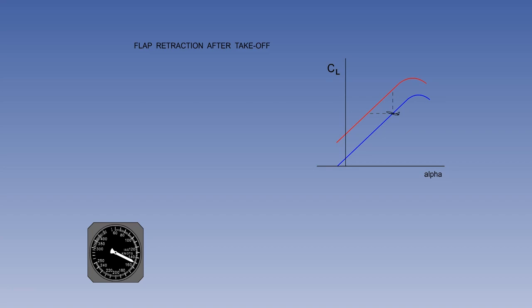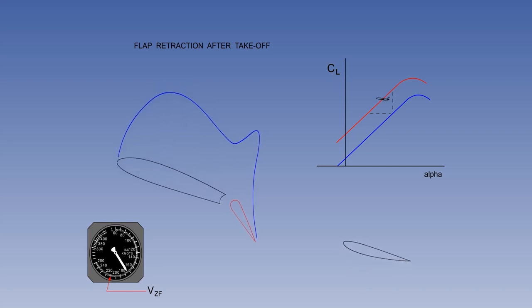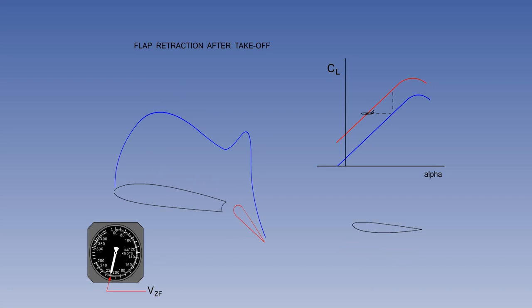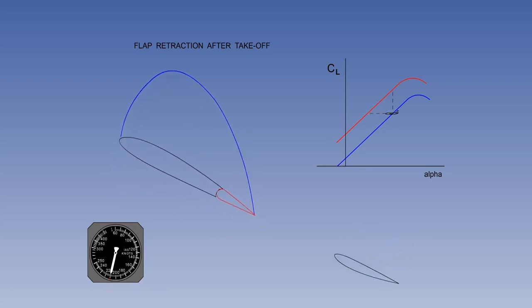We must trade indicated airspeed and angle of attack to keep lift the same as the weight. Before retracting the flaps, the indicated airspeed must be increased to VZF — the minimum indicated airspeed for zero flap. As the indicated airspeed increases, the angle of attack must be decreased to keep lift constant. Now when the flaps are retracted, the pilot can increase the angle of attack to keep the lift constant.